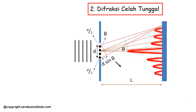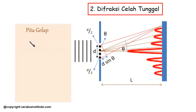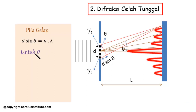Sehingga untuk pola gelapnya — atau dalam istilah gelombangnya adalah interferensi destruktifnya — itu terhitung dengan rumus D sin teta sama dengan N lambda. Ini yang untuk difraksi celah tunggal. Dan ingat, jika untuk sudut yang sangat kecil sekali, maka nilai sin teta itu sama dengan atau mendekati tan teta.